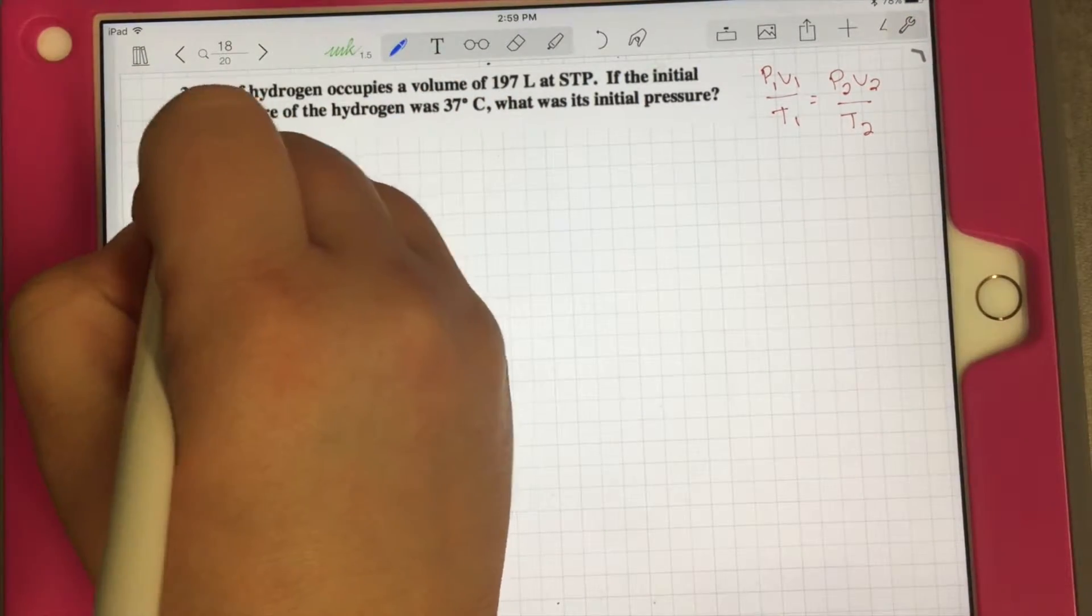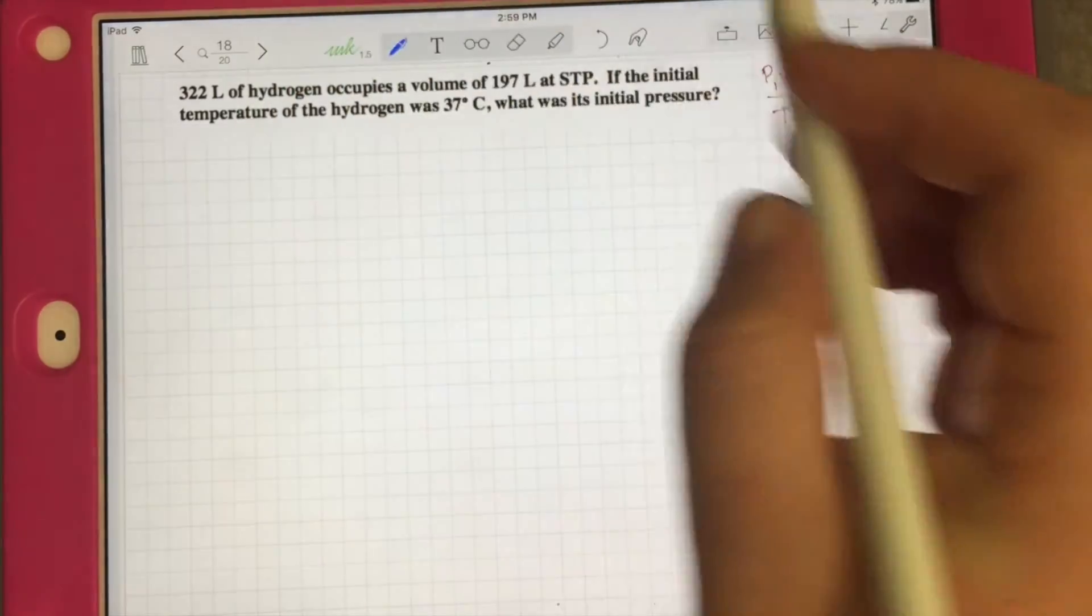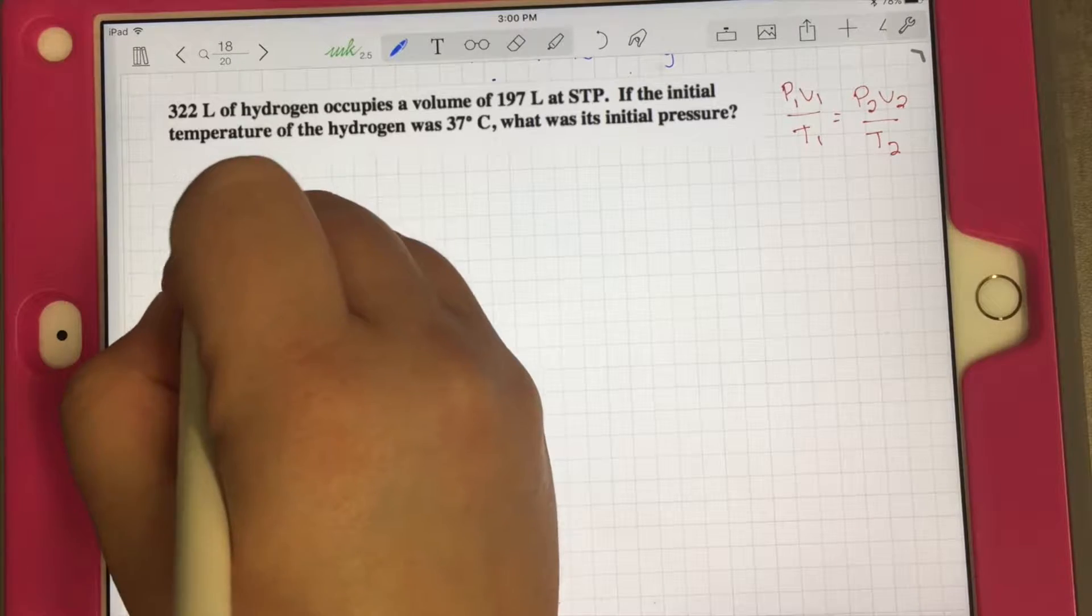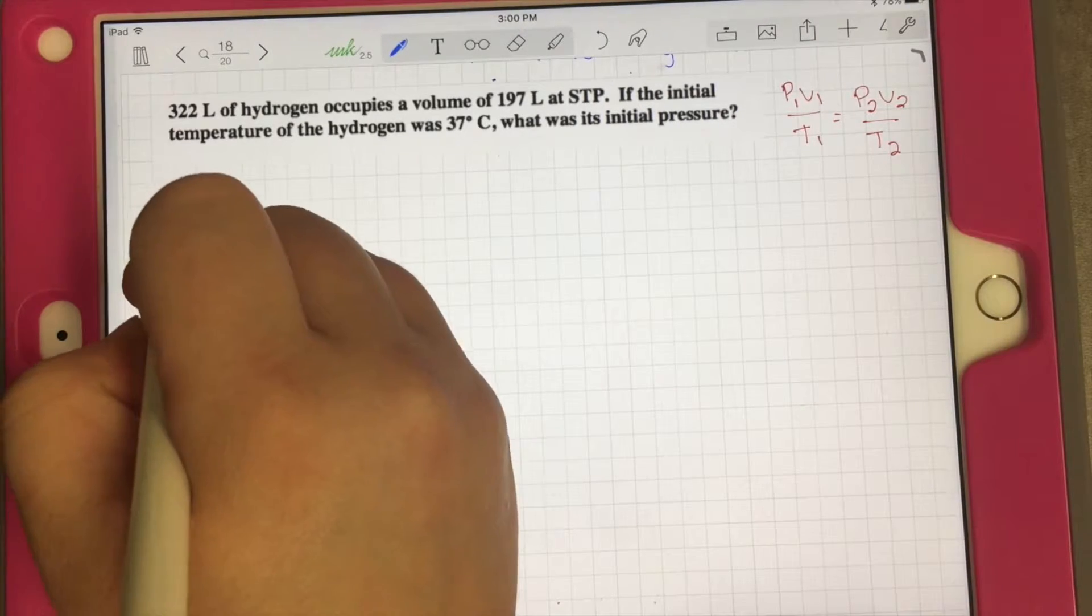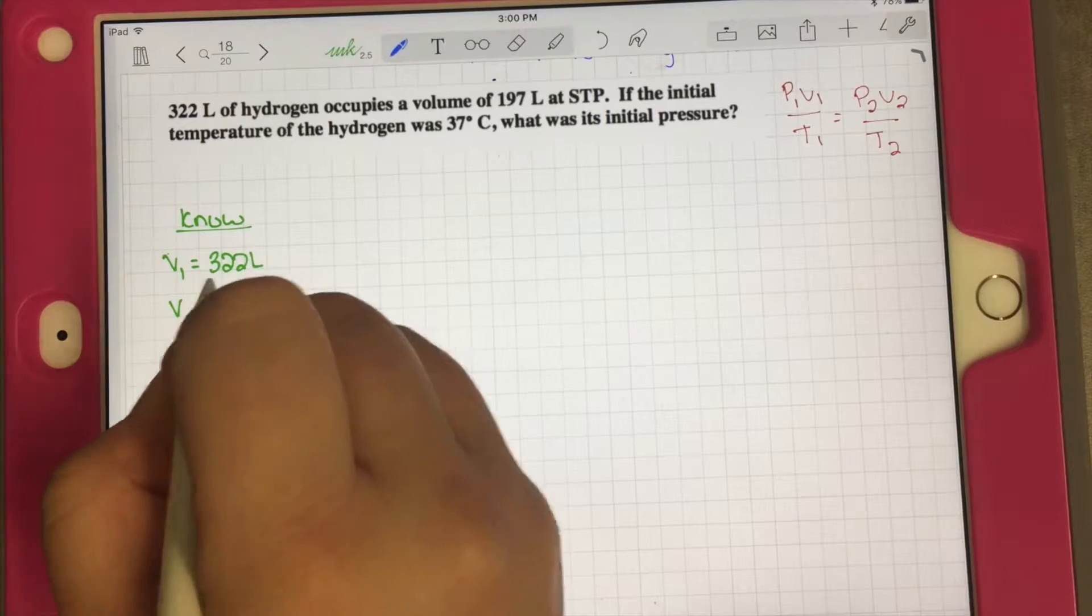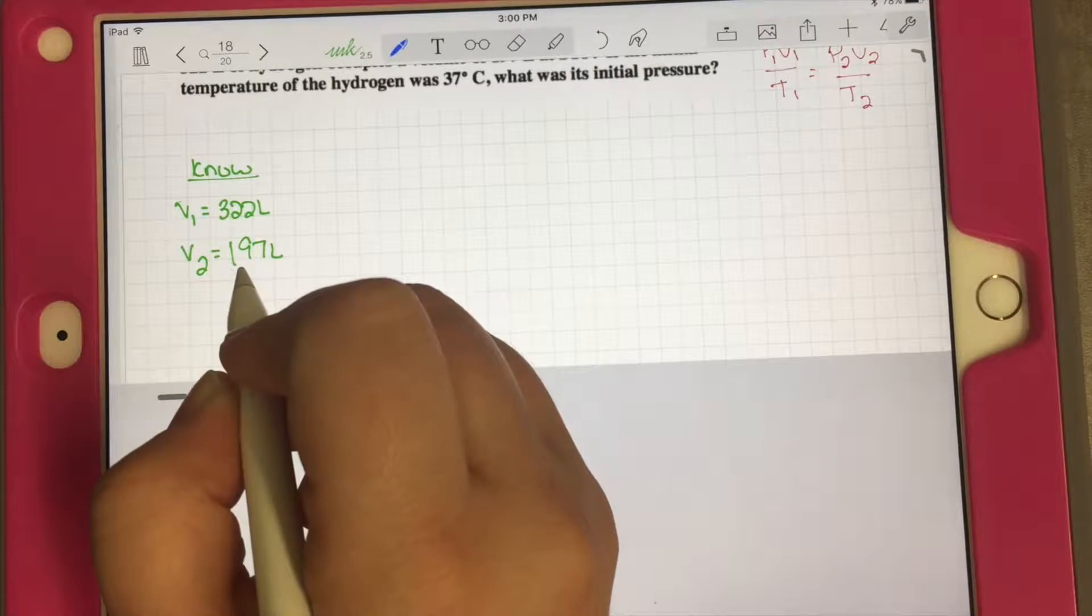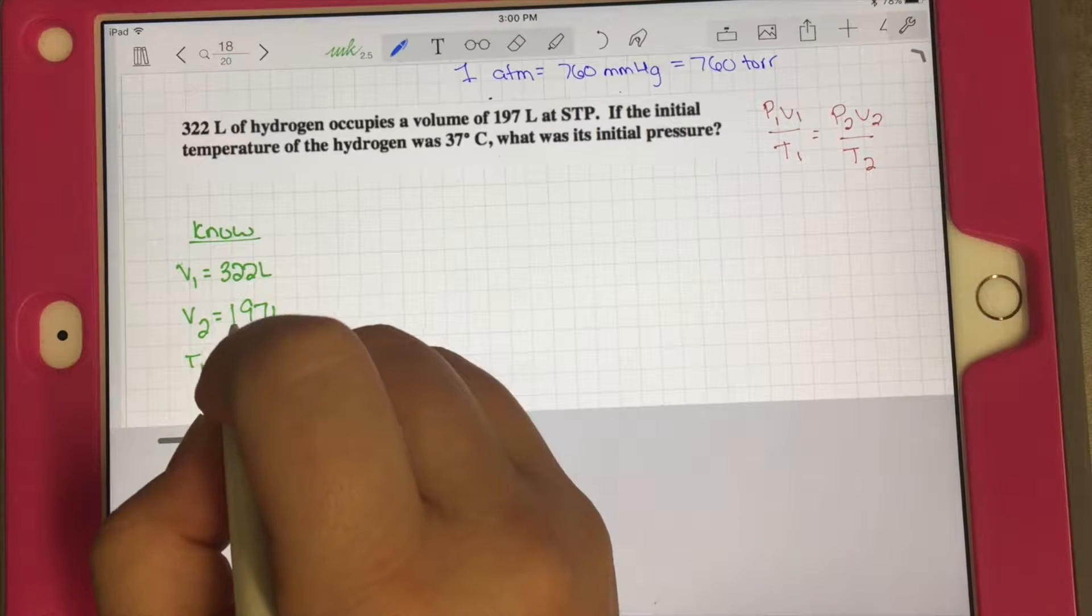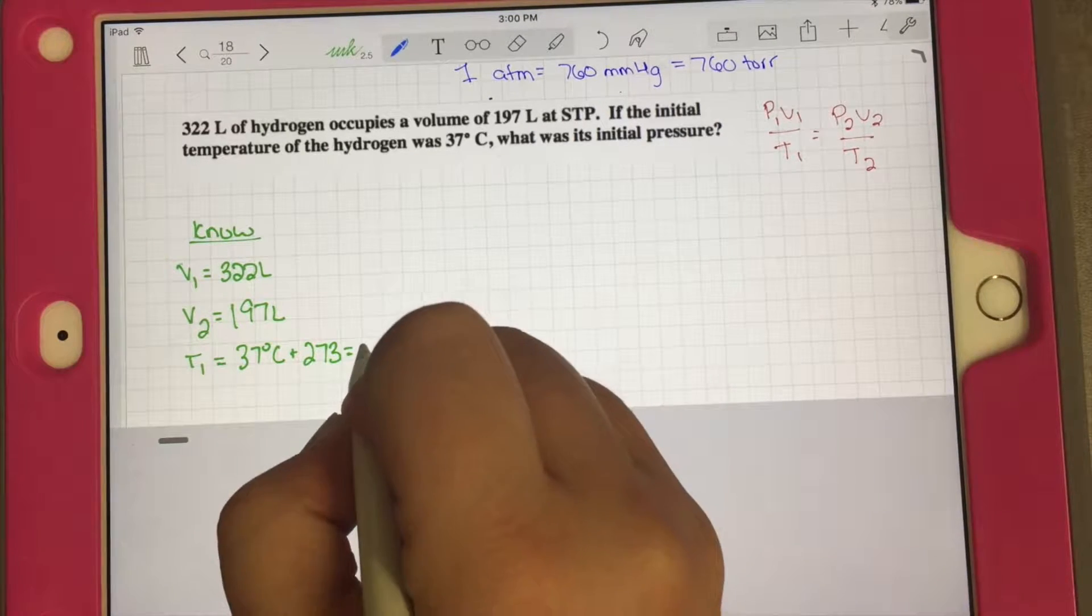We need to write down what we know, what information is given to us in our problem. We know that our initial volume V1 equals 322 liters. V2 is 197 liters. T1 is 37 degrees Celsius, but of course we have to convert that to Kelvin, so we're going to add 273. That's going to be 310 Kelvin. T2 is at standard temperature and pressure, so that's automatically 273 Kelvin.